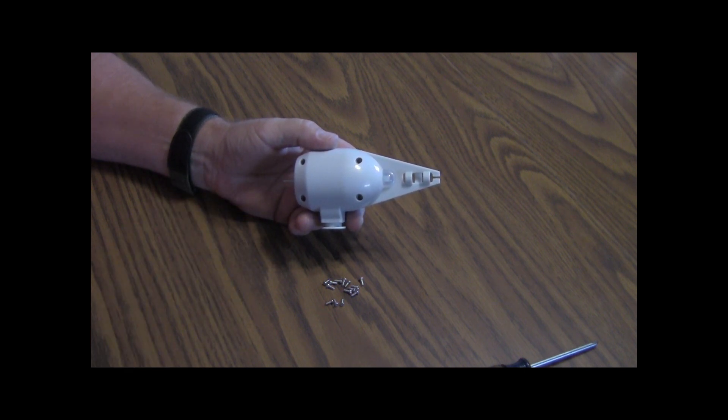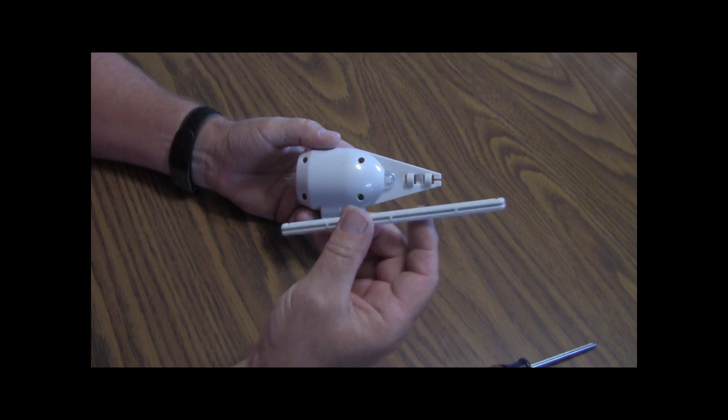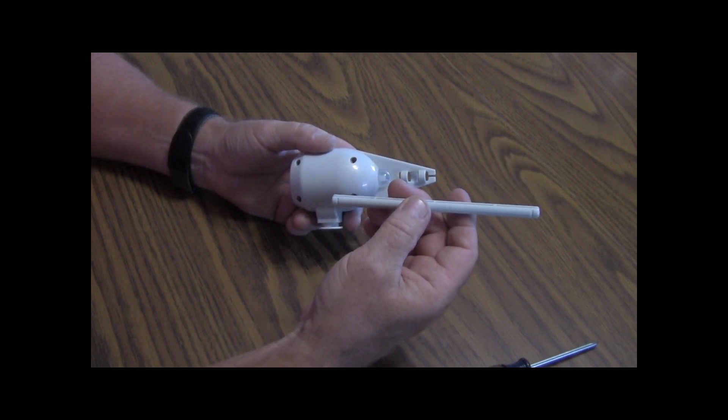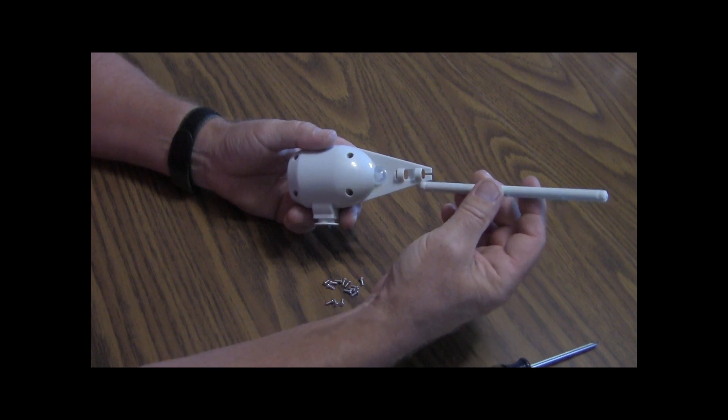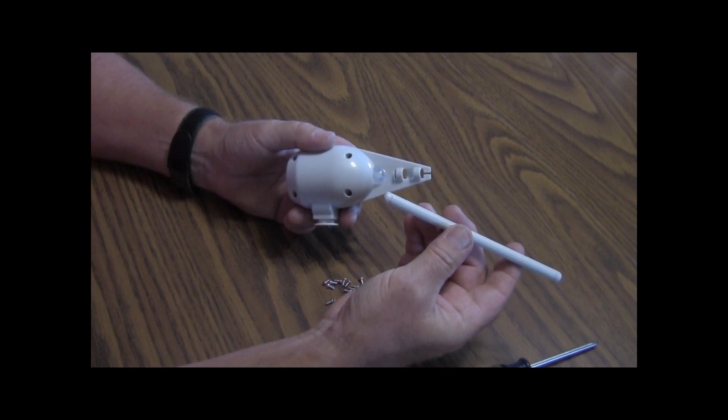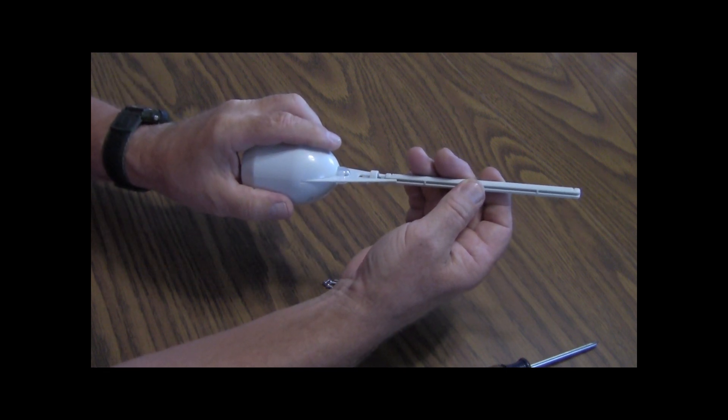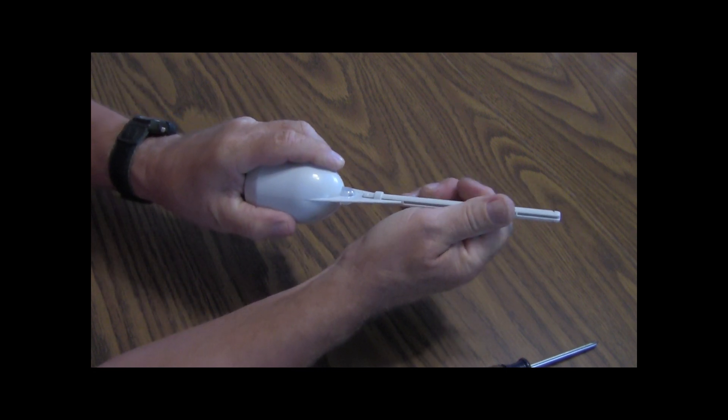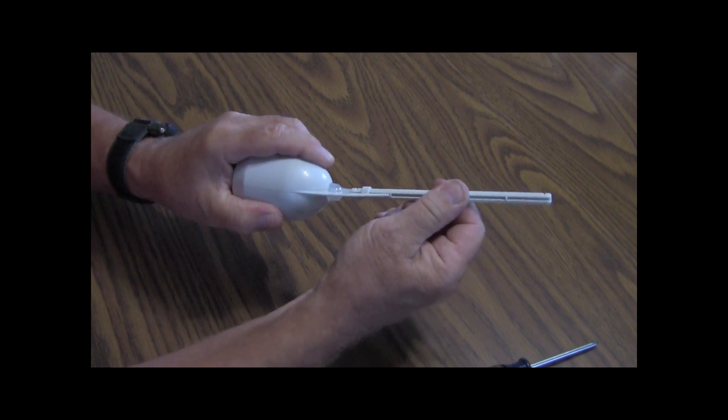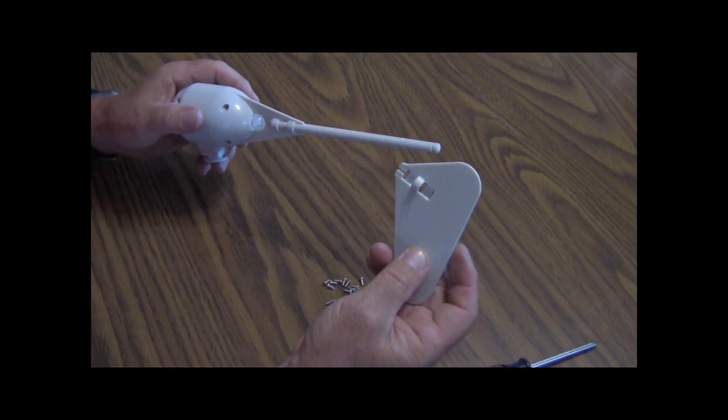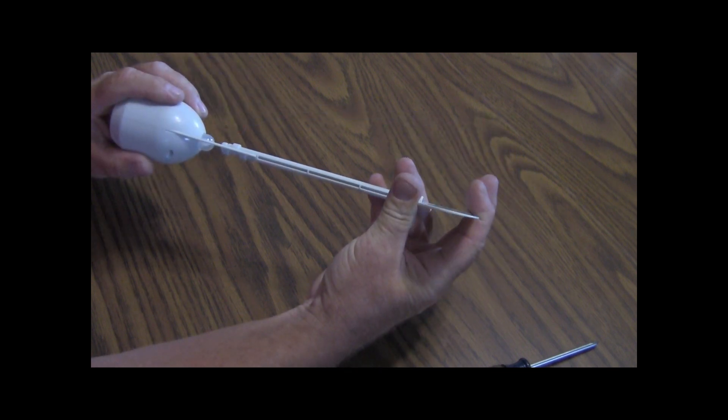Now I'm going to take this long shaft right here, and this is for the tail. I'm going to go ahead and, it looks like it's the same on both ends, so I'm going to take and slide it. You can see right here, just like that, until it snaps. Now it won't come out by itself.